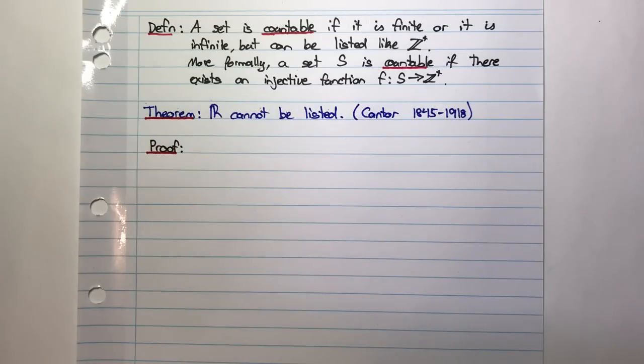So the definition is a countable set: a set is countable if it is finite or it is infinite but can be listed like the positive integers. A more formal way of saying this is that a set S is countable if there exists an injective function f from S to the positive integers.